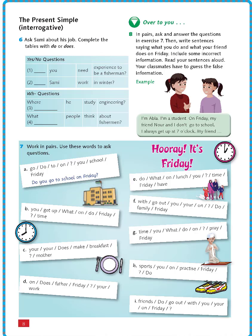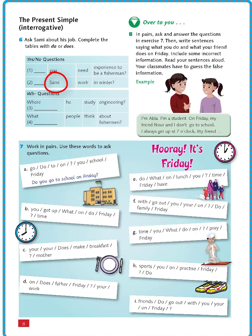Let's begin with yes or no questions. We have: 'You need experience to be a fisherman.' Because the subject is 'you', we use 'do', so the question will be: 'Do you need experience to be a fisherman?' Number two: because we have the subject 'Sammy', which is singular, we add 'does' — 'Does Sammy work in winter?'